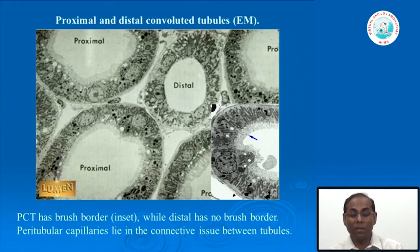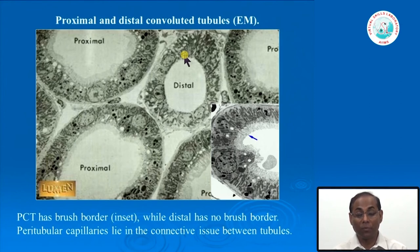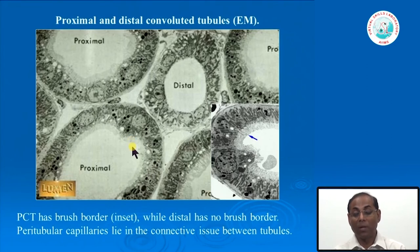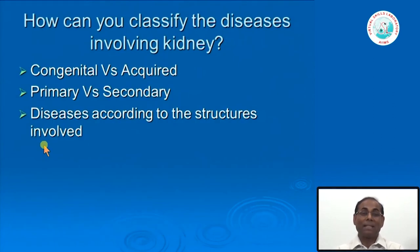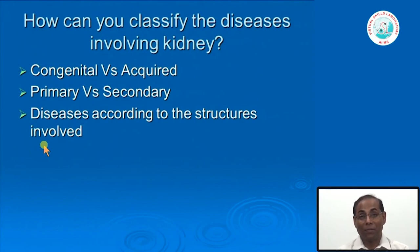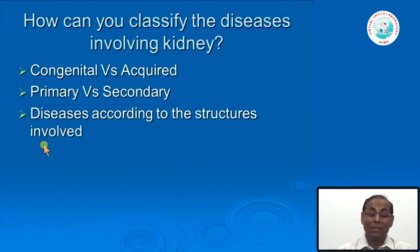Coming to the tubular system, there are two types of tubules: proximal tubules and distal tubules. Proximal tubules have a large surface area with a brush border to absorb large amounts of molecules, proteins, and other moieties, while distal tubules do not have a brush border. In between the tubules are the peritubular capillaries. This summarizes the structure of the kidney in relation to function, and now we enter into the diseases involving the kidney.